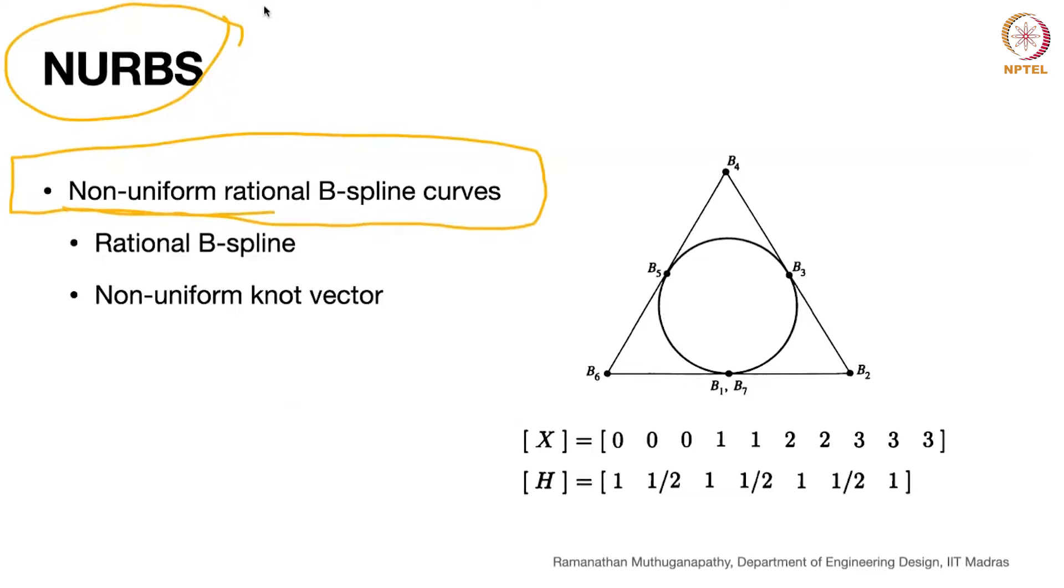Has anybody heard of non-uniform rational B-splines? Kind of absolutely silent now. B-spline is the farthest we have probably heard of, and even that is rare. I will just briefly tell the idea of non-uniform rational B-spline.